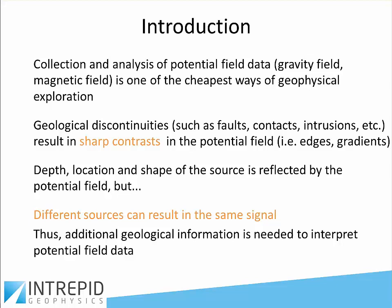Geological discontinuities in potential field data — such as faults, contacts, and intrusives — show up as sharp contrasts in the potential field. The depth, location, and shape of the source is reflected in the potential field, but it's still subject to ambiguity, with many different sources having similar signal characteristics. Therefore, additional geological information is needed to interpret the potential field data, but it's a great start.